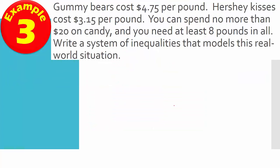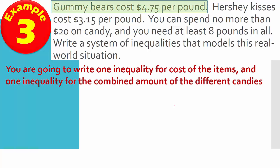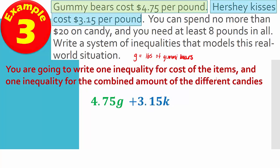And then finally, our last example. We have a different, again, a different situation because this is an inequality. So gummy bears cost $4.75 a pound. Okay, so that would be $4.75, and I use g this time. So that would be pounds of gummy bears. And then, Hershey Kisses cost $3.15 a pound. So I'd use k for pounds of Hershey Kisses. I'll just write Kisses so we can save some time here.